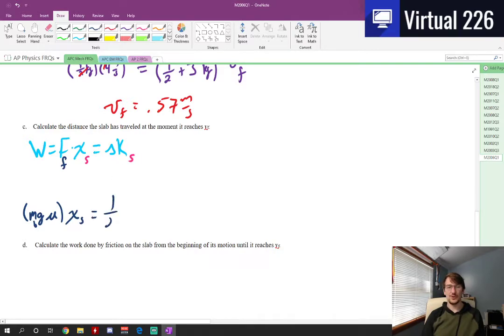Then multiply by the distance the block goes. And this equals the change of kinetic energy, which is one half M for the slab VF squared minus one half M VI squared, but VI is zero here. So we could just ignore it really. We don't even have to put that minus zero. We can just get rid of it.